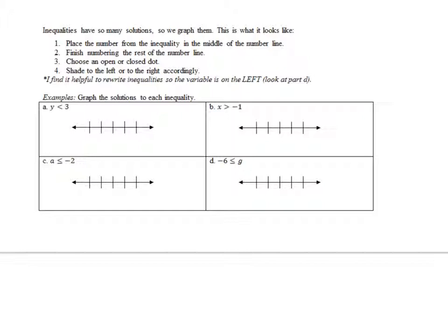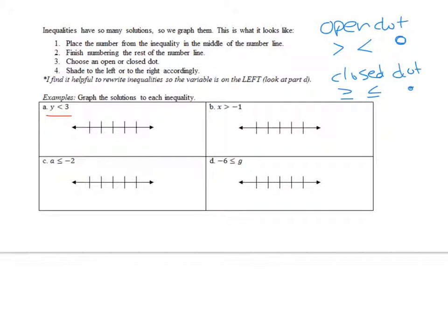When we graph an inequality on the number line, put the number in the middle of the line and include 0. For y is less than 3, use an open dot — open dots are for greater than or less than, and closed dots are for greater than or equal to or less than or equal to. Mark 3 with an open dot, put 0 over here. Since 3 is greater than y, numbers less than 3 go this way — shade it and put an arrow, meaning it continues infinitely.